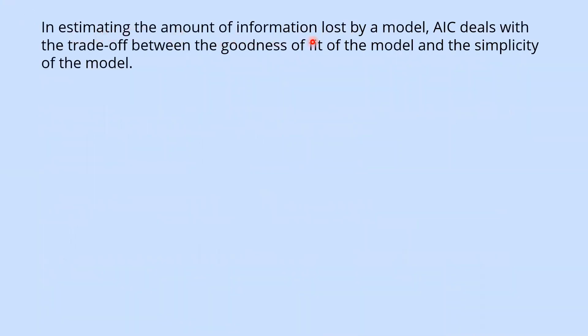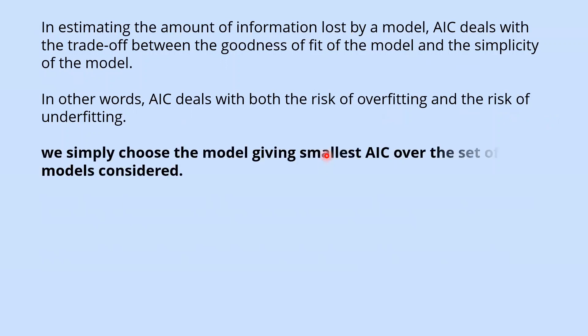In estimating the amount of information lost by a model, AIC deals with the trade-off between the goodness of fit of the model and the simplicity of the model. In other words, AIC deals with both the risk of overfitting and the risk of underfitting. We simply choose the model giving smallest AIC over the set of models considered.